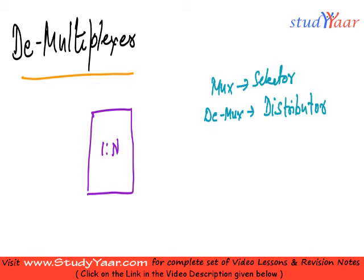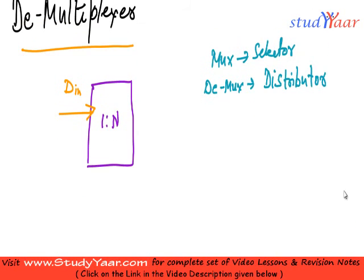What you have over here is one input which is called as D in or data in. And you have N outputs. These are my N outputs. Let me call this as Y0, Y1, dot dot dot, till YN.